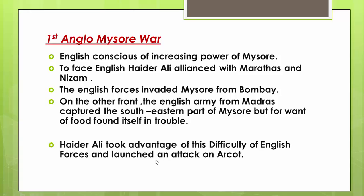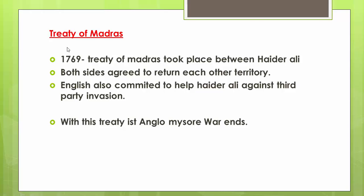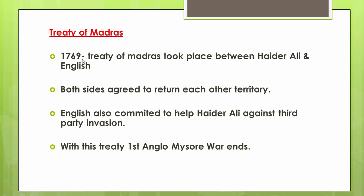The English army from Madras captured the southeastern part of Mysore, but they found themselves in trouble due to a shortage of food. Haider Ali took advantage of this difficulty and launched an attack on Arcot, plundering villages along the way. The English, panic-stricken, sought peace and signed the Treaty of Madras in 1769, between Haider Ali and the English, in which both sides agreed to return each other's territories won during the war. The English also committed to help Haider Ali against third-party invasion.